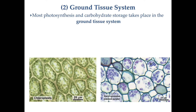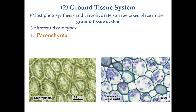The ground tissue system is located under the dermal layer and fills all the spaces in the plant wherever you don't have dermal or vascular tissue. It functions as the factory of the plant: most photosynthesis takes place here, and carbohydrates produced during photosynthesis are stored here as well. The ground tissue system includes three different tissue types.